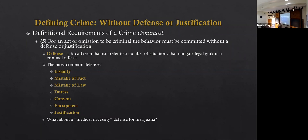Justification defenses are basically saying: yeah, I did it, but under the circumstances, it wasn't wrong. For example, you're out in the woods, stranded, the temperature is dropping, and you come across an empty, vacant cabin. You know if you stay outside you're going to die. So you kick down the door, get inside, start a fire, get warm. You've just committed burglary, or at the very least, breaking and entering. If you get charged, we're going to say that under these circumstances, what he did was justified — we don't want greater harm to occur.